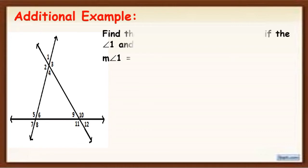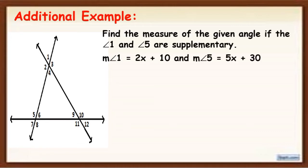Now let's have another example. We are going to find the measure of the given angles if the measure of angle 1 and angle 5 are supplementary. The measure of angle 1 is equal to 2x plus 10 and the measure of angle 5 is equal to 5x plus 30. Since angle 1 and angle 5 are supplementary, ibig sabihin, if we add angle 1 and angle 5, the measure is 180.